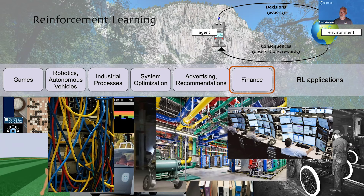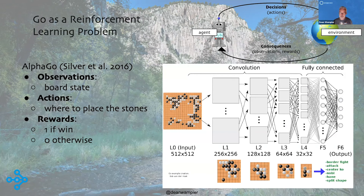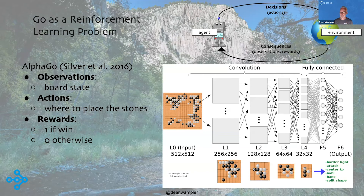Let's talk a little more about Go as a reinforcement learning problem. In this case, the observations are the board state — where the stones are on the board. The actions are where to place the next stones. Interestingly, there's no immediate reward as you play — it's modeled as either winning or not, with only a reward at the very end. They used a neural network to model this, and when analyzed, various layers looked at various levels of granularity of the board state.